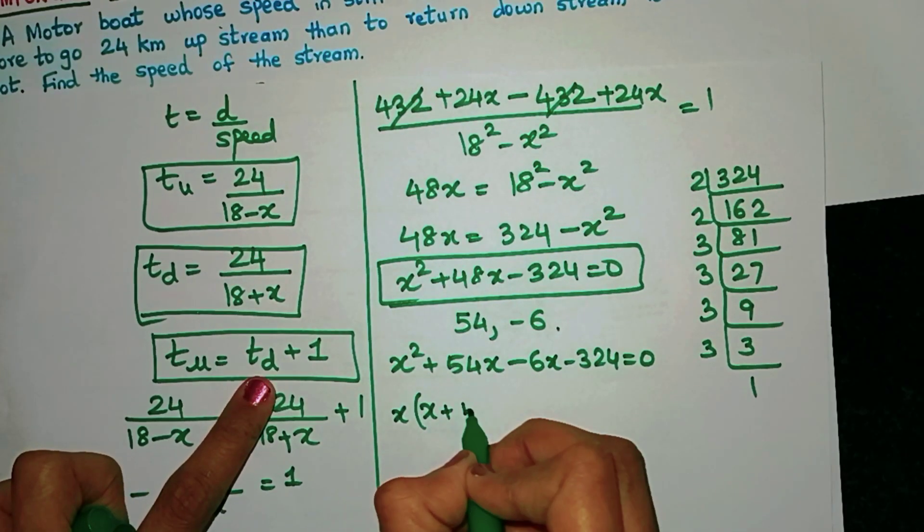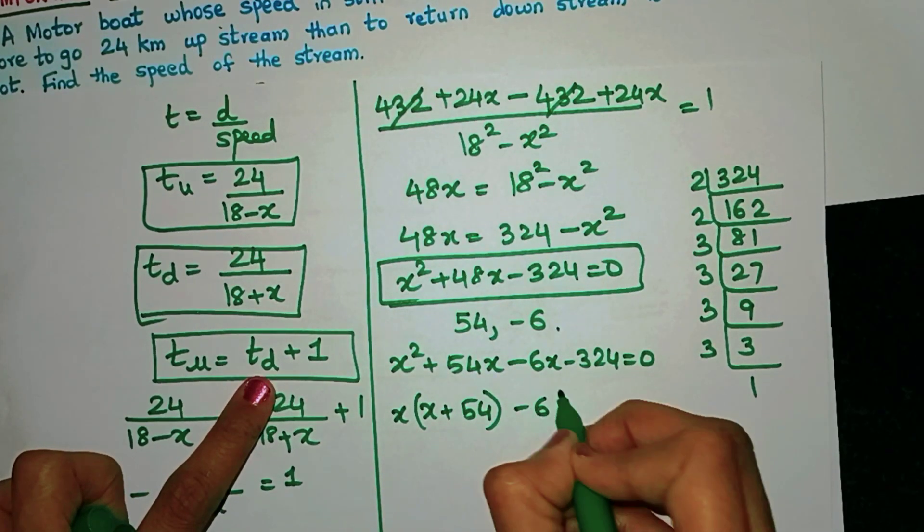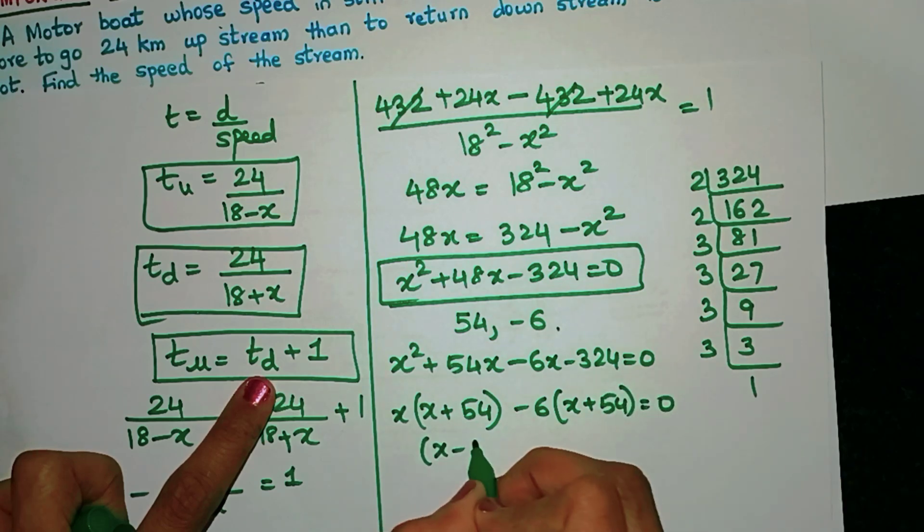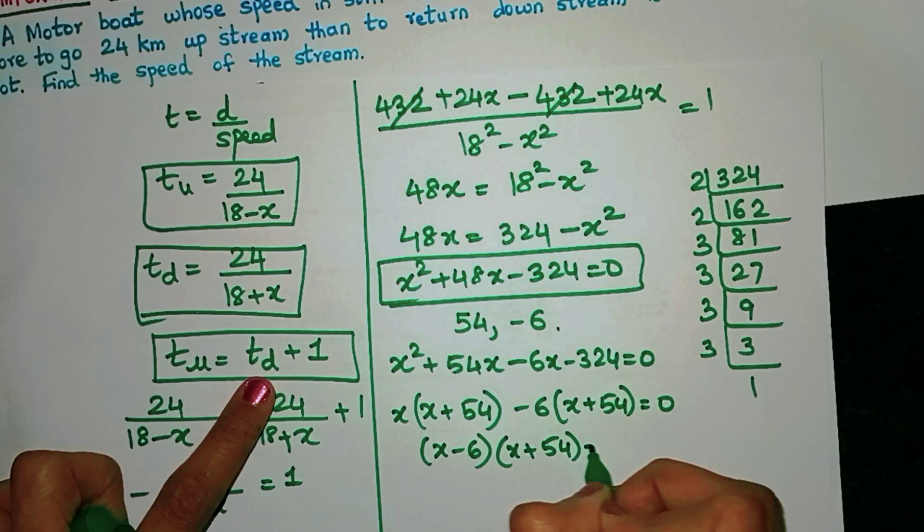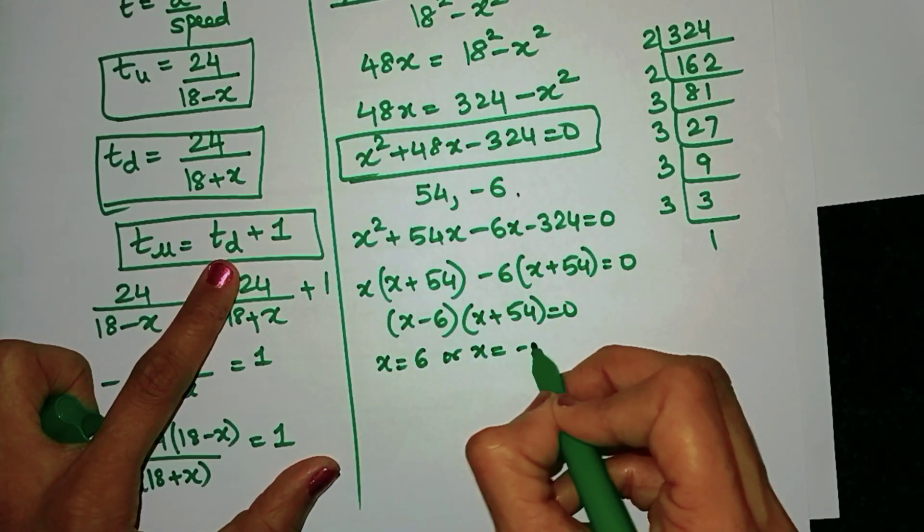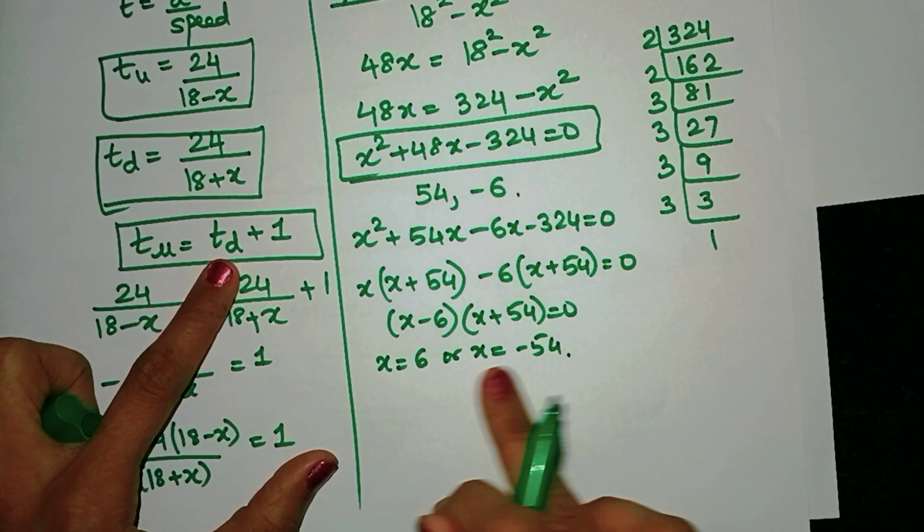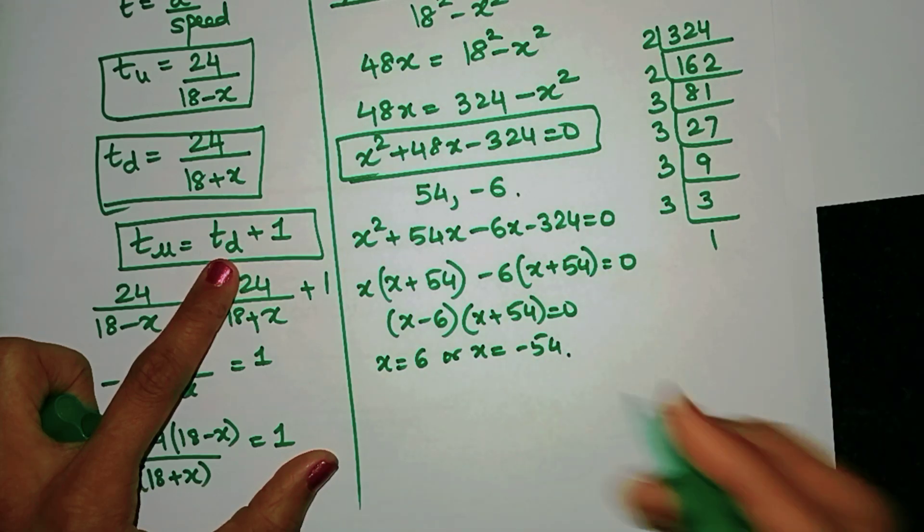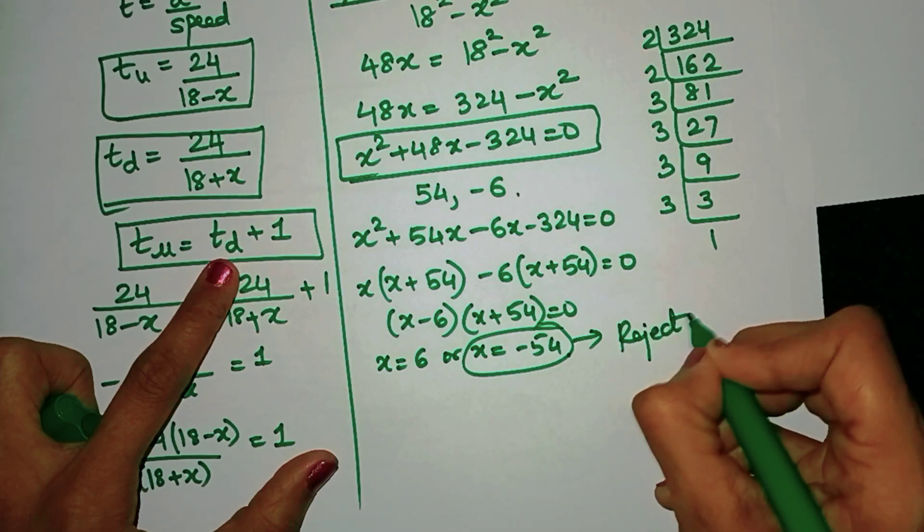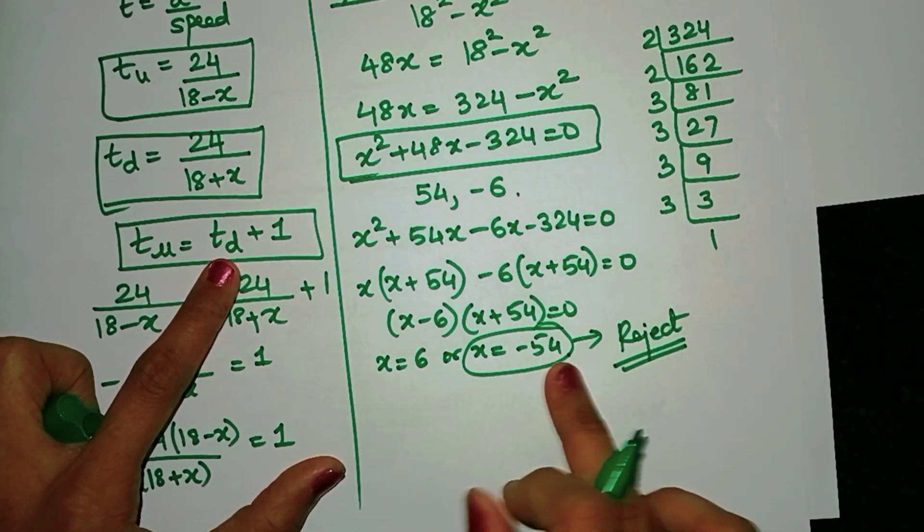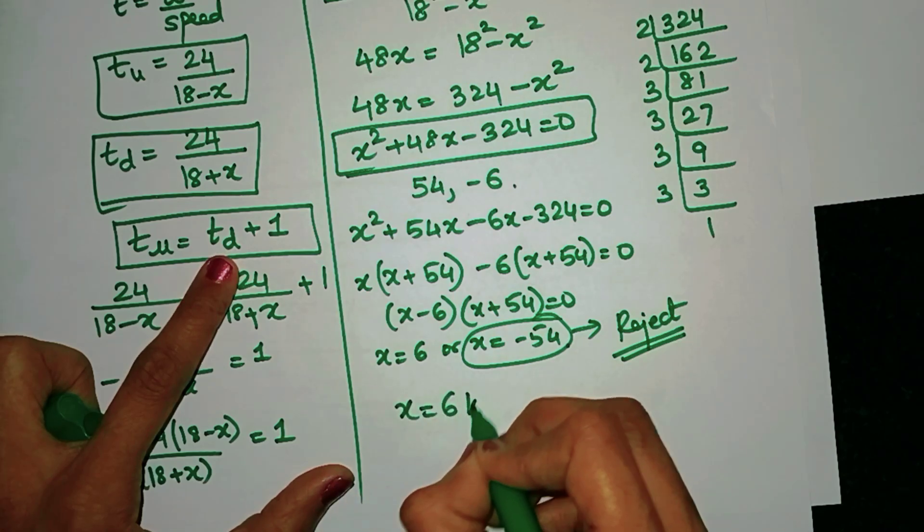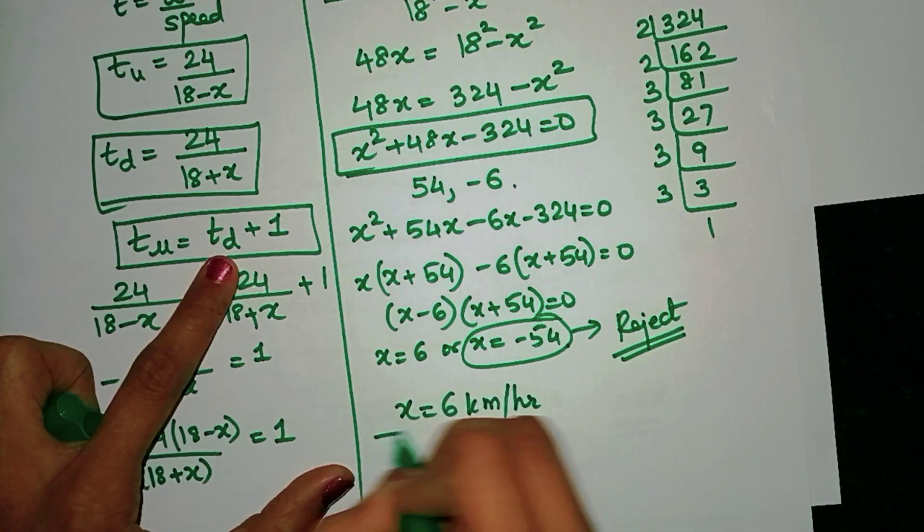Now let me take out whatever I can take as common. I will get (x - 6)(x + 54) = 0. This means x is 6 or x is minus 54. Can the speed of the stream be negative? Definitely not, so I am going to reject this. Please give the proper reasoning that we are rejecting minus 54 because speed cannot be negative. That means the speed of the stream is 6 km/hr.